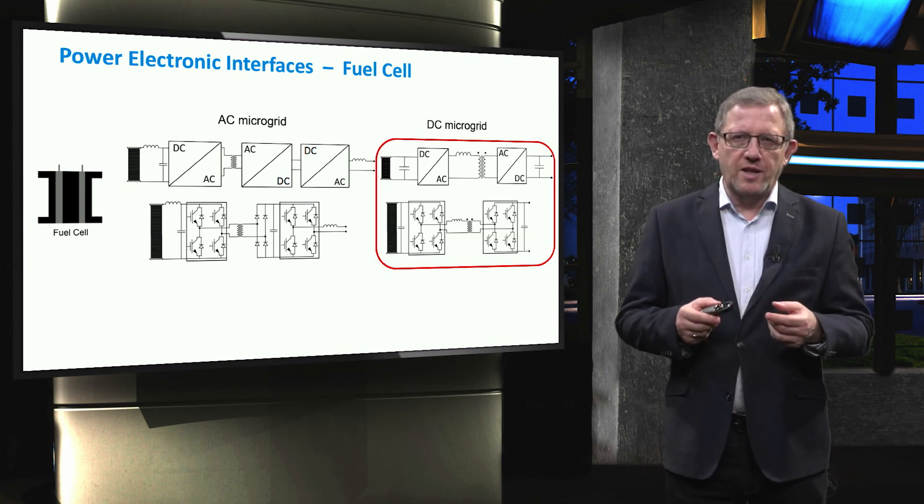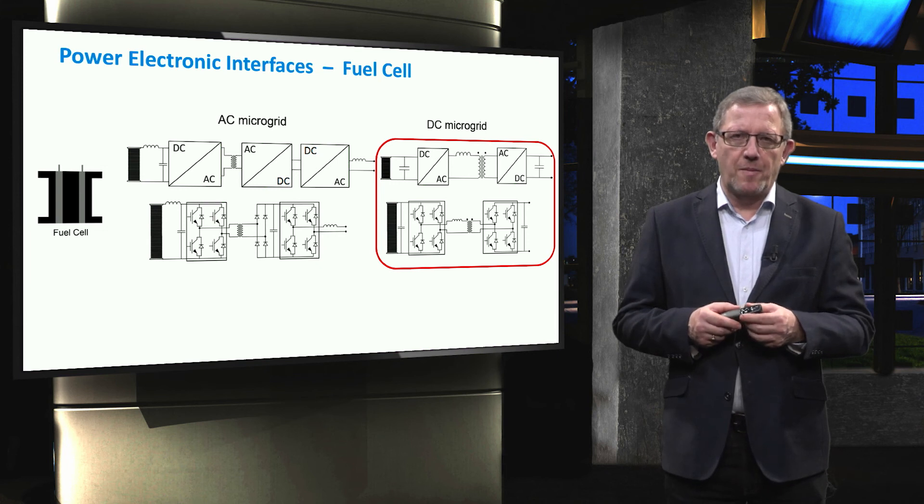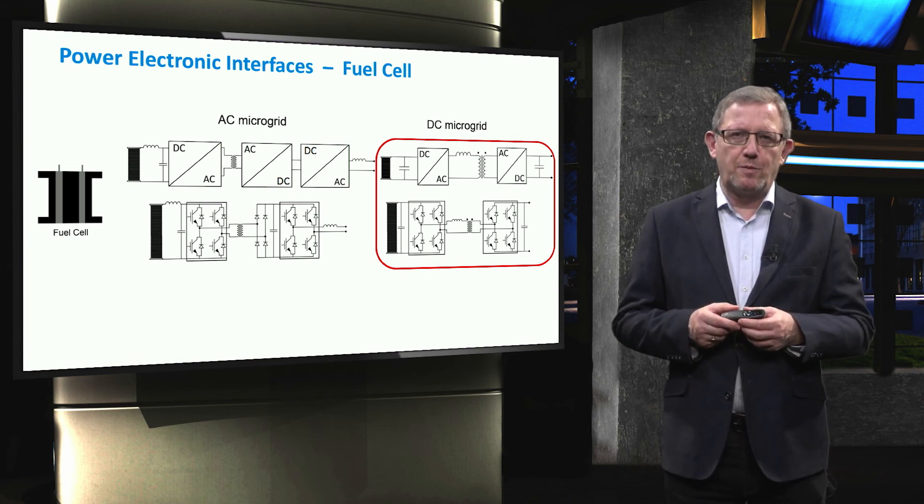Also, the fuel cell can be simply connected to a DC microgrid through the previously discussed boost DC-DC converter. However, to increase the efficiency and controllability, the dual active bridge topology with high frequency transformer can be used with preference.